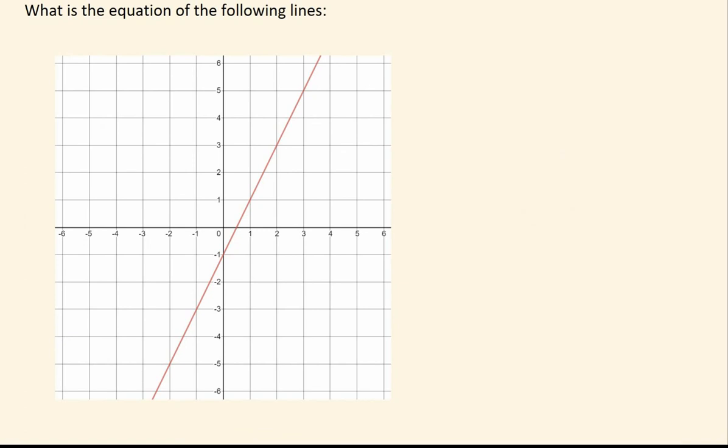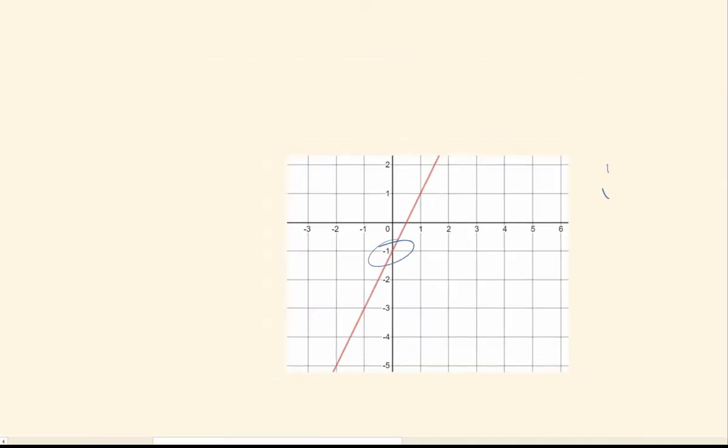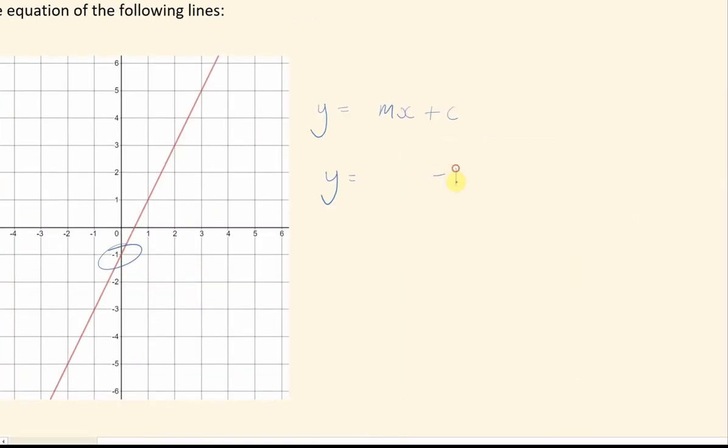Okay, this one, the exact same idea. It's going to be y equals mx plus c. Here my c is not 0. If I zoom in, my y-intercept is here. That means it's going to end with a minus 1, because c is the cut at minus 1.